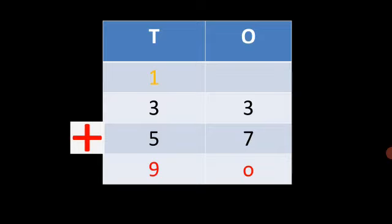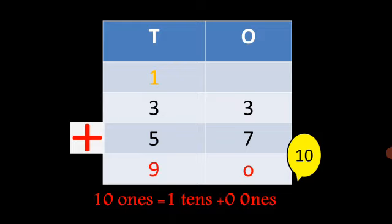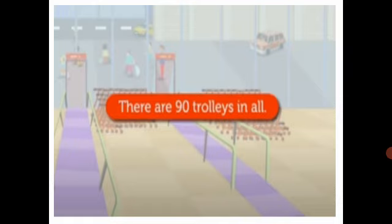First, we add the 1's: 3 plus 7 is equal to 10. We group 10 to get 1 tenth plus 0 ones. Carry 1 tenth to the tens column and write 0 in the 1's column. Now, add the 10's: 1 plus 3 plus 5 is equal to 9. So, there are 90 trolleys in all.